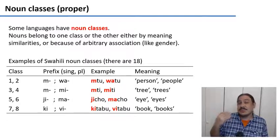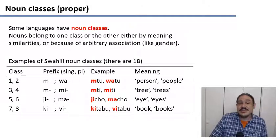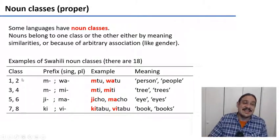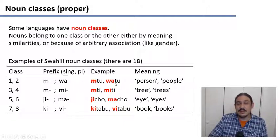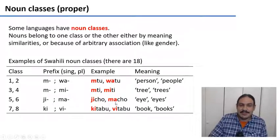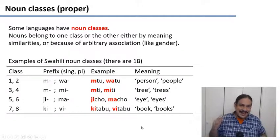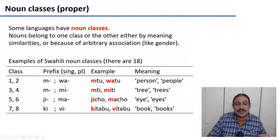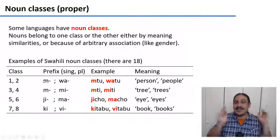So if you have a few classes, we usually call those gender. If there are many classes, they're usually called noun classes. In Swahili, for example, you can split nouns in 18 different ways. Classes one and two have words with prefixes 'm' for the singular and 'wa' for the plural, as in 'mtu' and 'watu' — person, people. In classes five and six, the singular uses the prefix 'ji' and the plural uses 'ma,' as in 'jicho' and 'macho' — eye, eyes. And again, there's no reason why something goes into one class rather than another — they were arbitrarily assigned, just like grammatical gender.